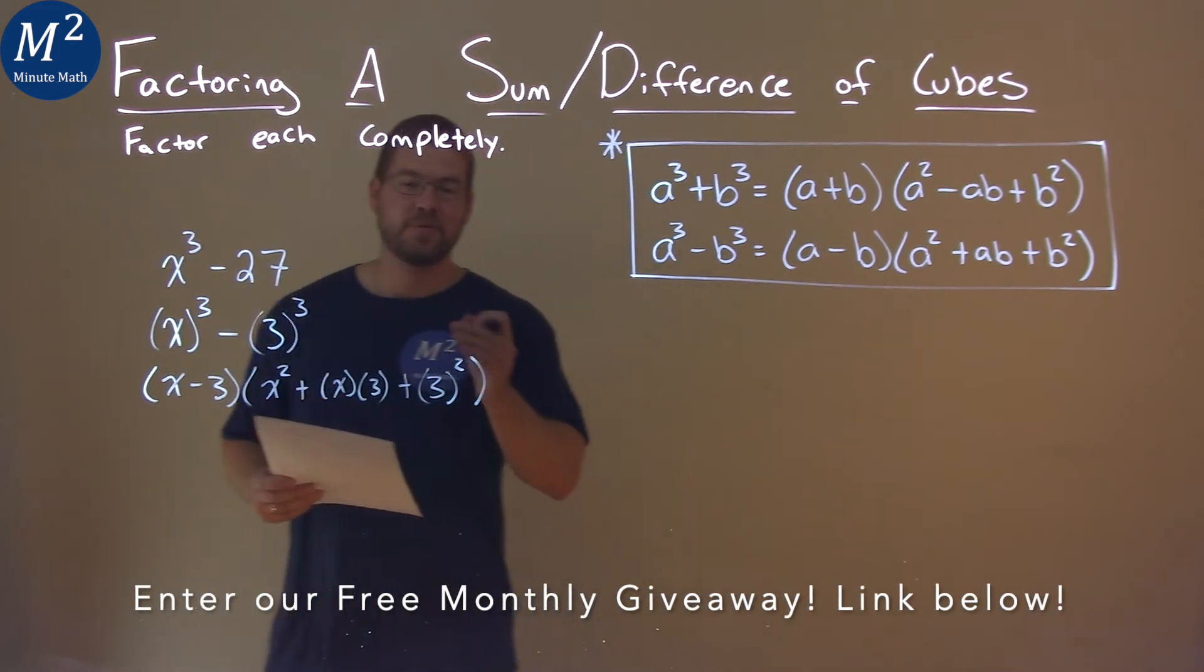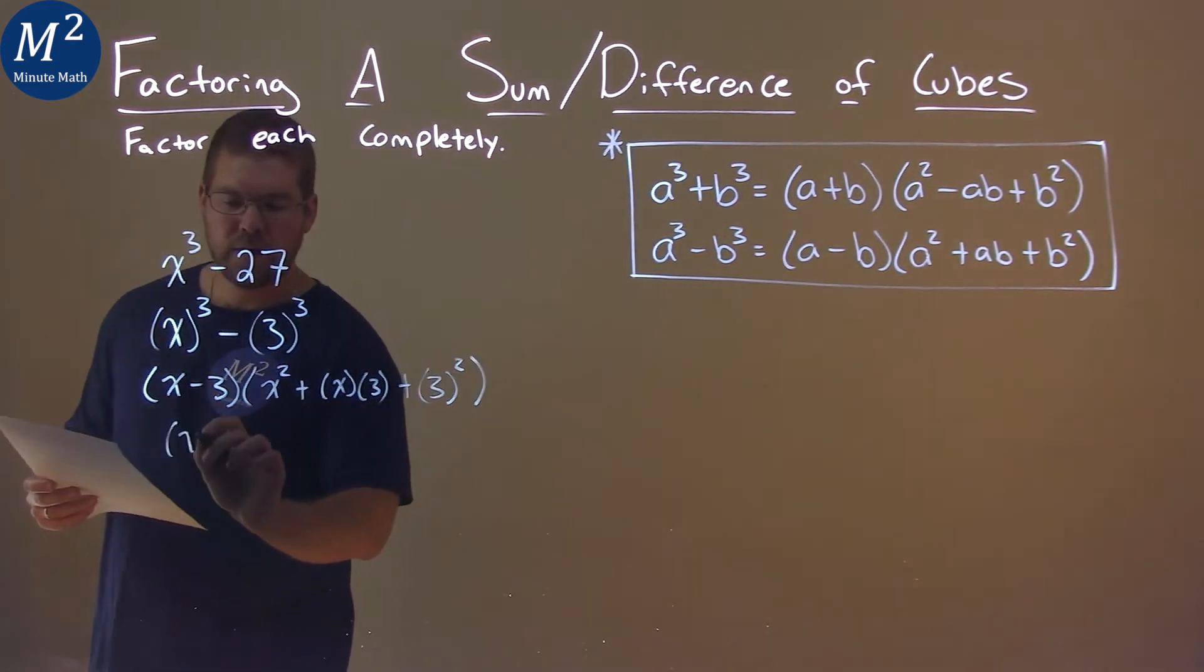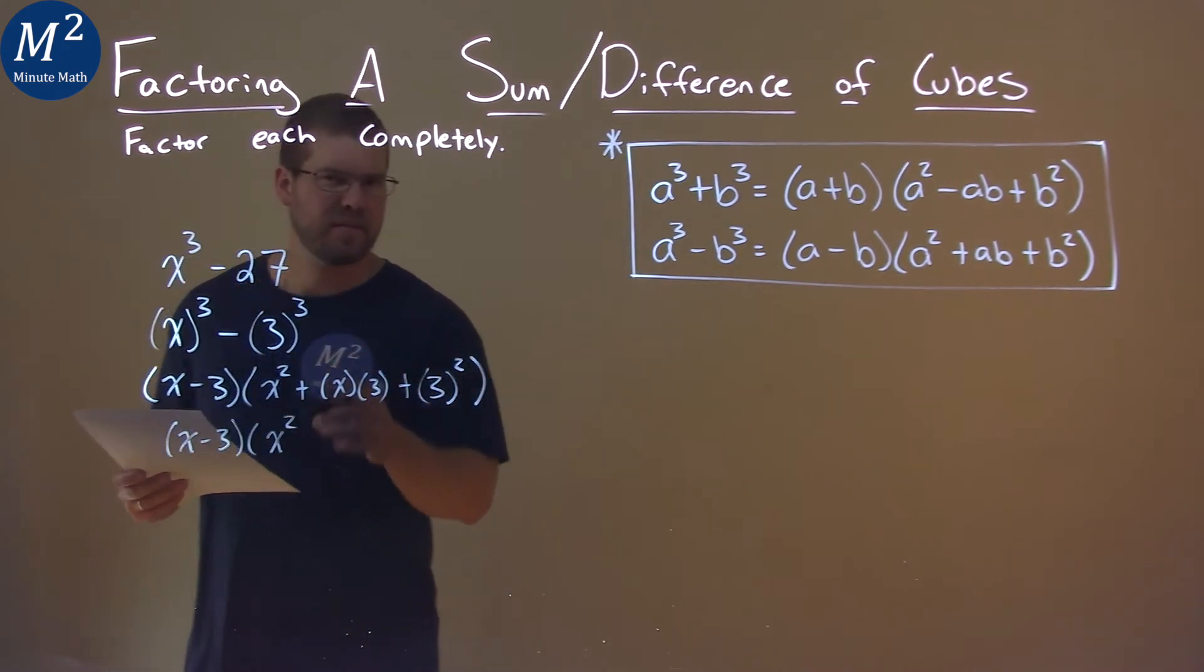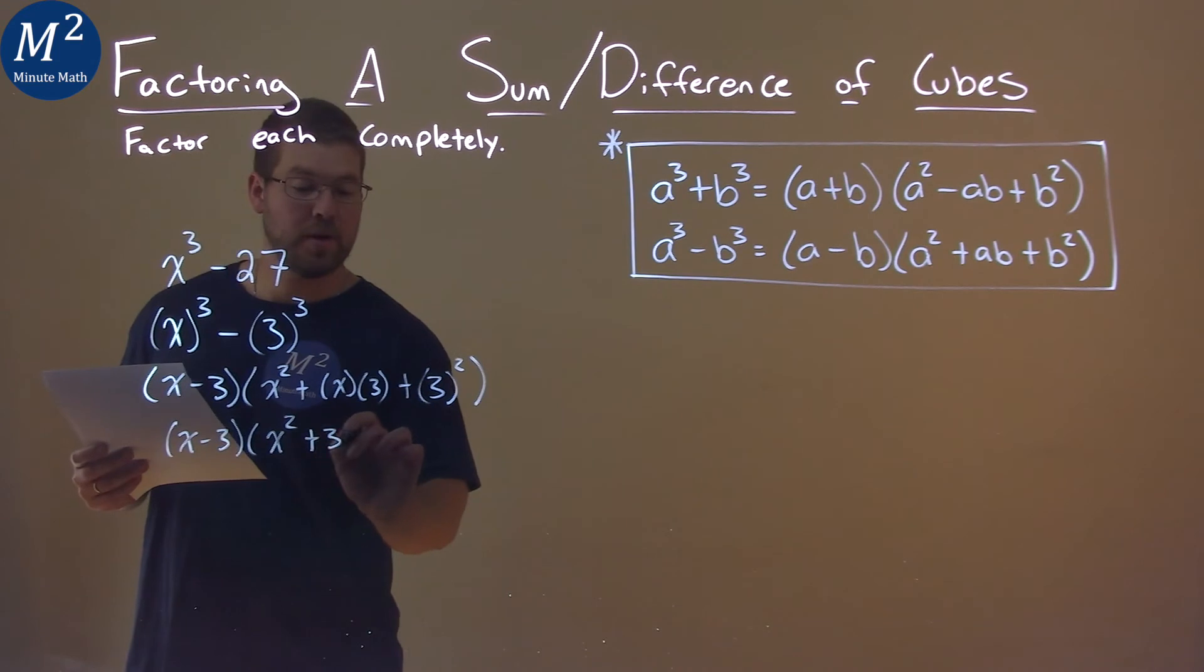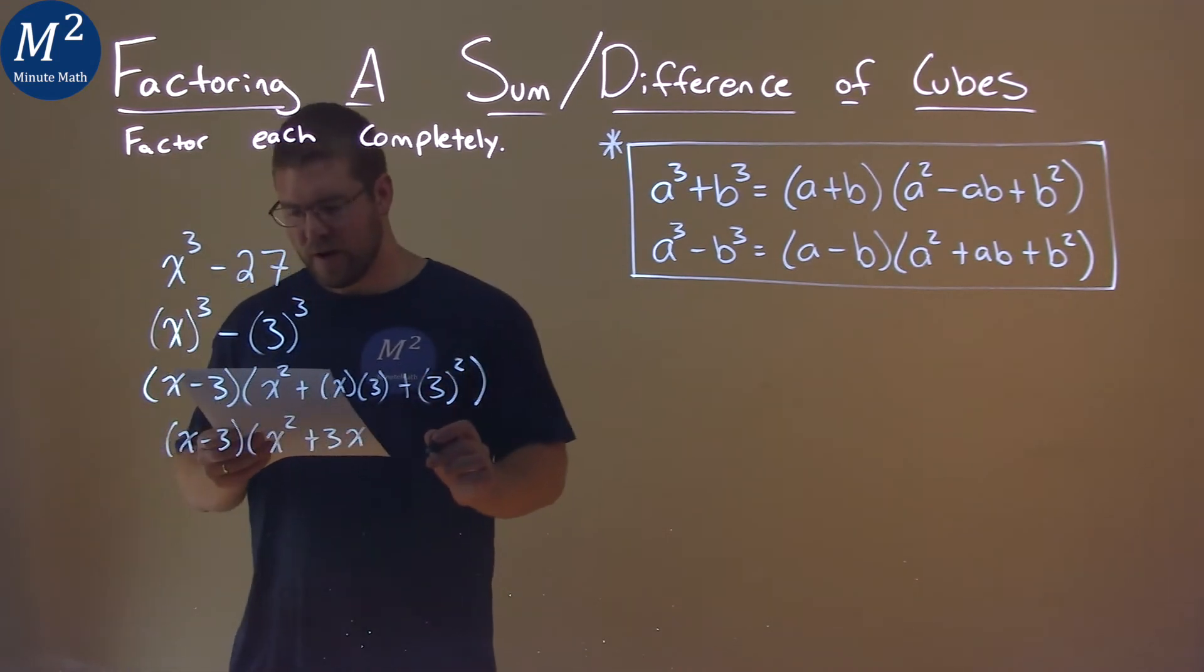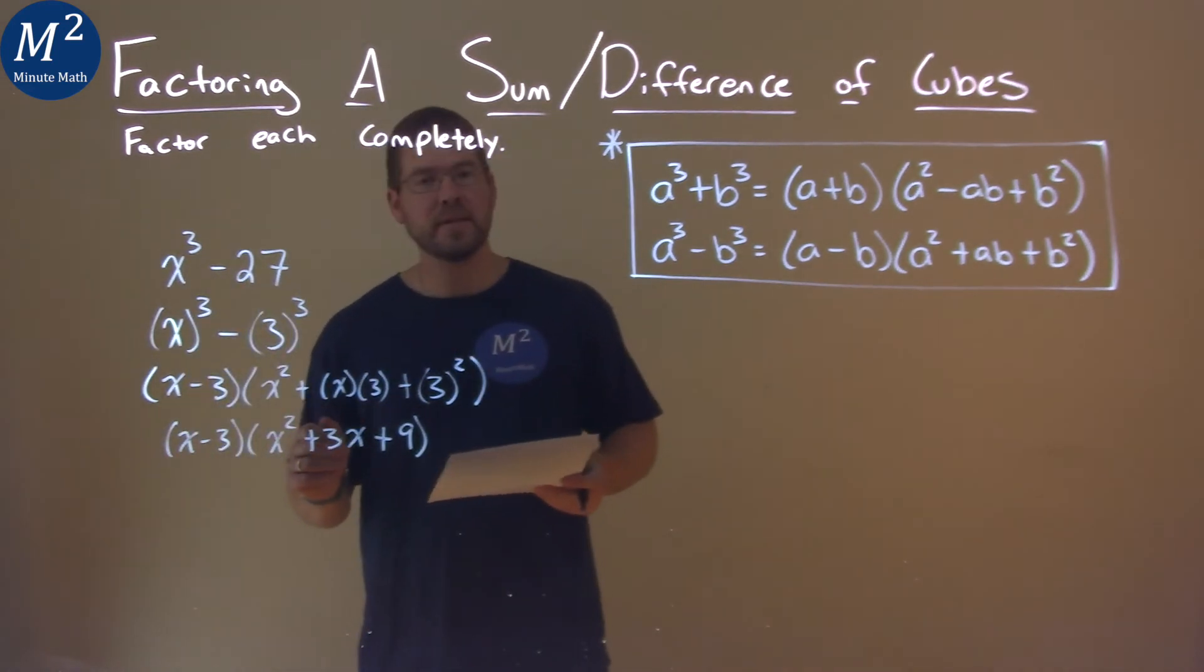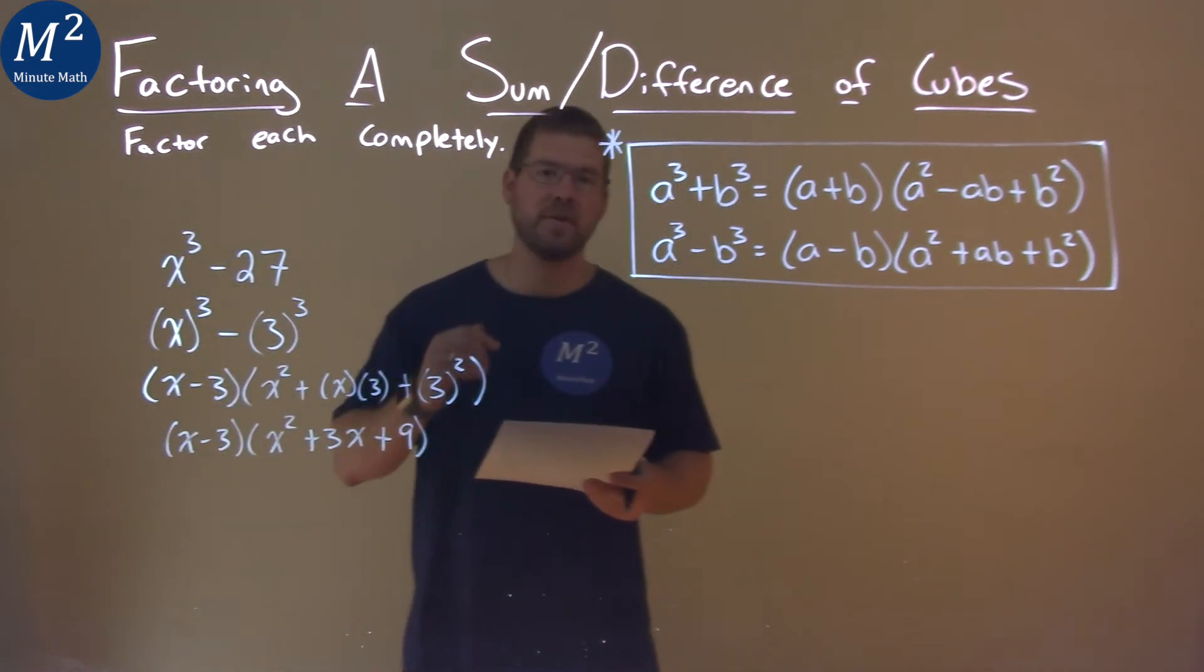Now we just have to simplify. x minus 3, x squared pretty much the same. x times 3 can be 3x, and 3 squared is 9. So our final answer is x minus 3 times x squared plus 3x plus 9.